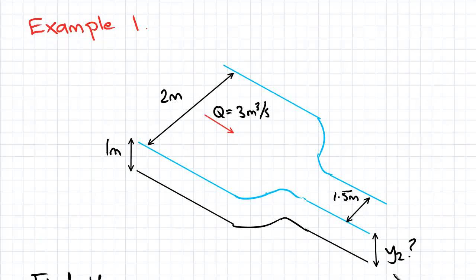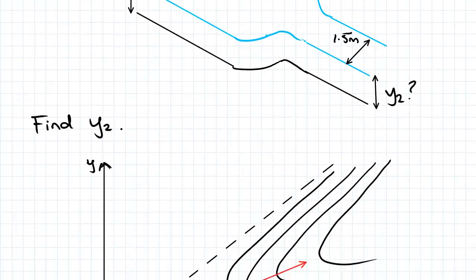Instead we've got a change in width which will impact our value for flow per meter width. Now if you recall from a previous conceptual video, we said that each specific energy curve was for a specific value of little q.